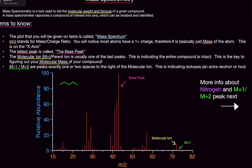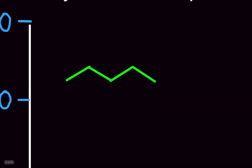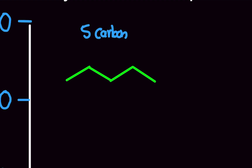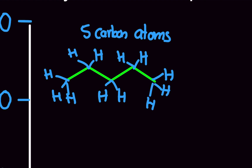Let me quickly explain what's going on with this example molecule. We have five carbon atoms. Counting the hydrogens: hydrogen here, here, here — twelve total. So we have five carbon atoms and twelve hydrogen atoms.